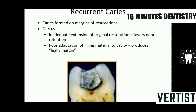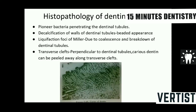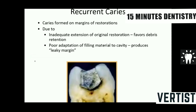Recurrent caries forms on the margins of a restoration. Sometimes the entire caries lesion is not removed, or there is inadequate extension of the original restoration that favors debris retention. There can also be poor adaptation of filling material to the cavity, producing a leaky margin. Amalgam restorations can separate from the tooth surface, producing a leaky margin that leads to recurrent caries.